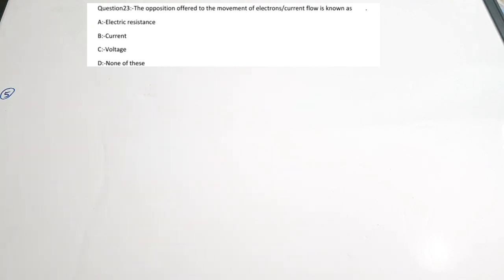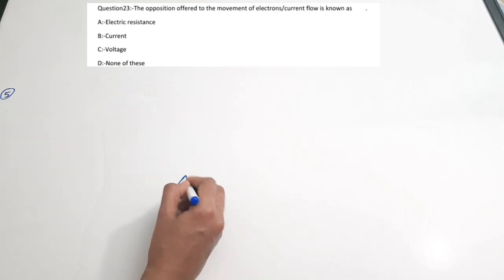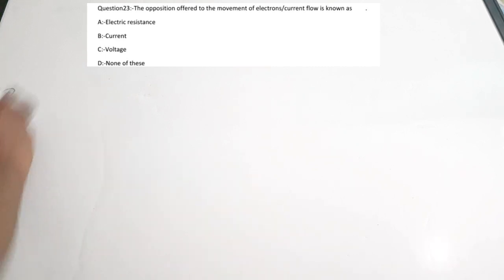The fifth question: the opposition offered to the movement of electrons or current flow is known as — dash. Options: A) electric resistance, B) current, C) voltage, D) none of these. The opposition to current flow is called electric resistance. The flow of charge is called current. Voltage or potential difference is the work done to move a unit charge from one potential to another. The correct answer is option A, electric resistance.